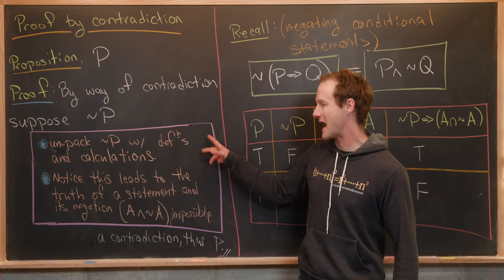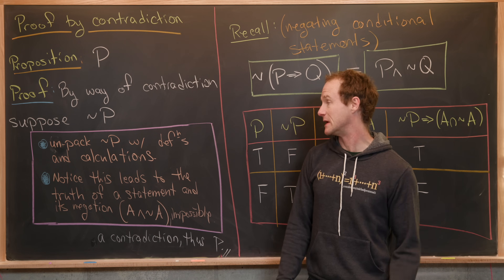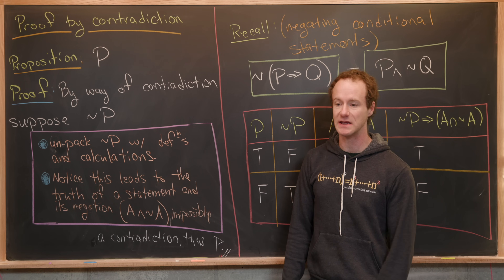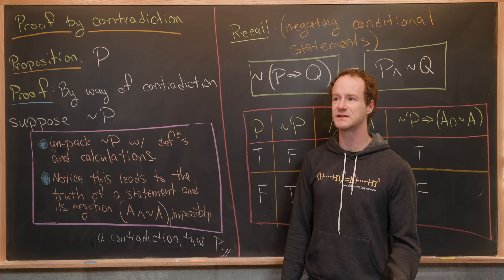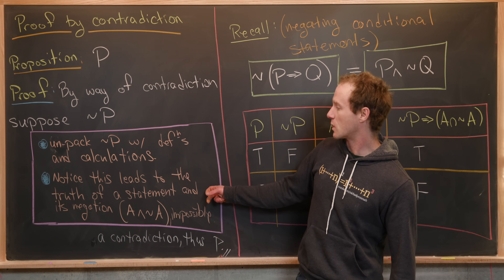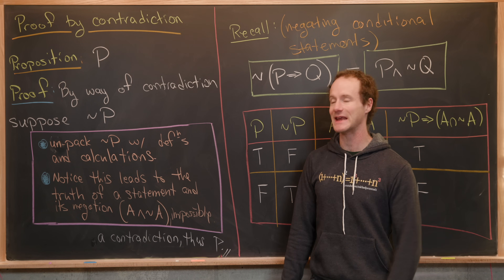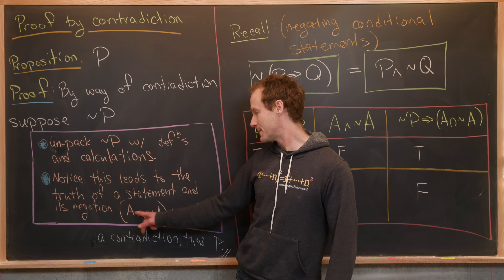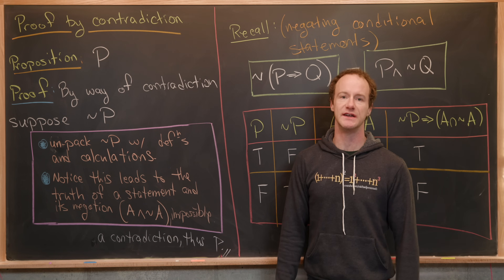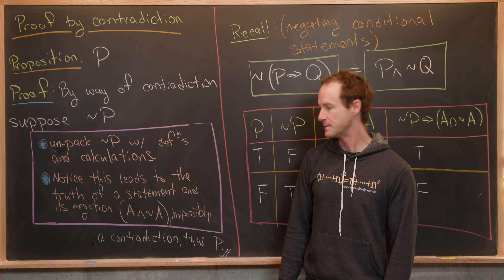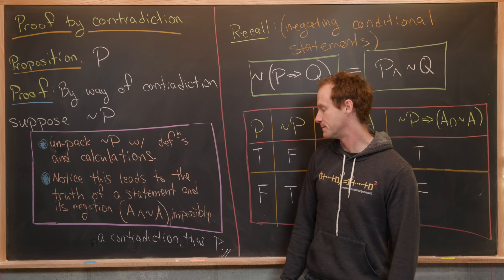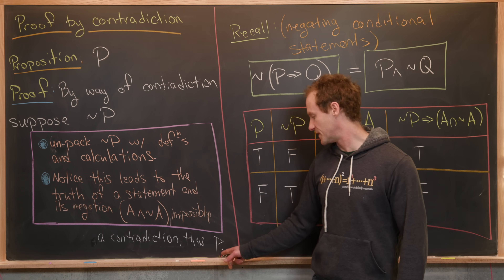Here is the outline of all the math that's happening. You first want to unpack 'not P' with definitions and calculations. Maybe P is something like 'f is a continuous function,' so not P would be 'f is discontinuous somewhere.' Or maybe P is 'n is an even integer,' so not P would be 'n is an odd integer.' Now we're going to notice that this leads to the truth of a statement and its negation — that statement A and not A are simultaneously true. That's obviously impossible: a statement and its negation cannot both be true at the same time. You'd finish with something like 'a contradiction, thus P is true.'